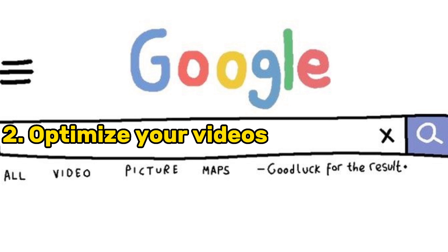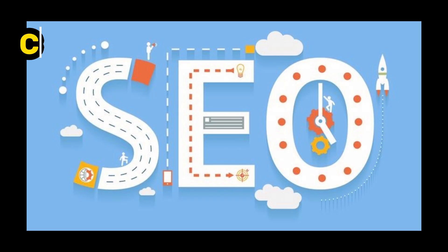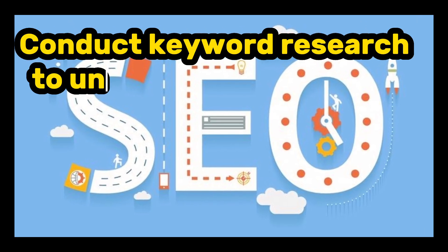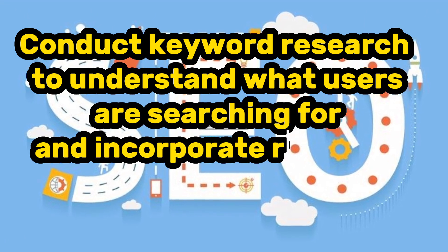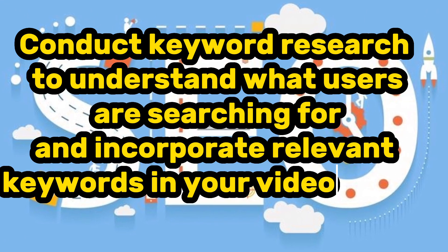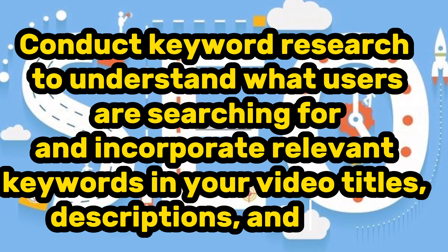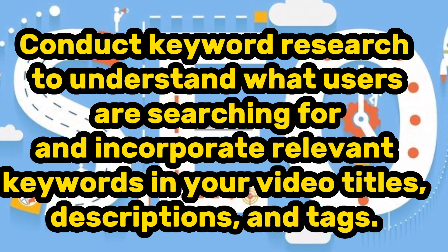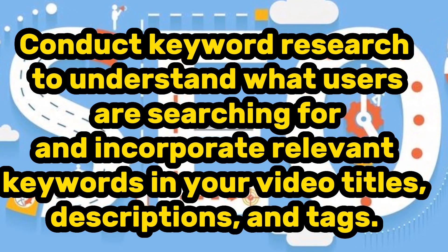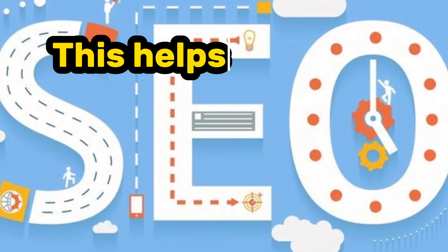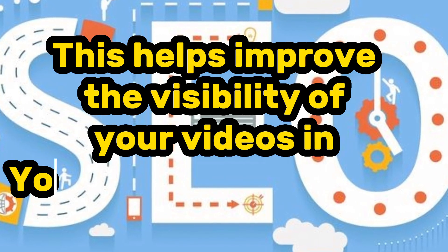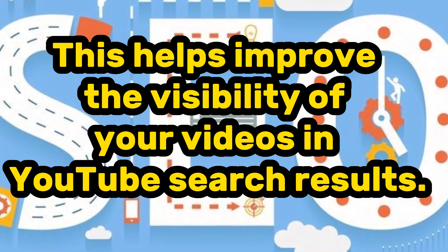Number 2: Optimize your videos for search. Conduct keyword research to understand what users are searching for, and incorporate relevant keywords in your video titles, descriptions and tags. This helps improve the visibility of your videos in YouTube search results.